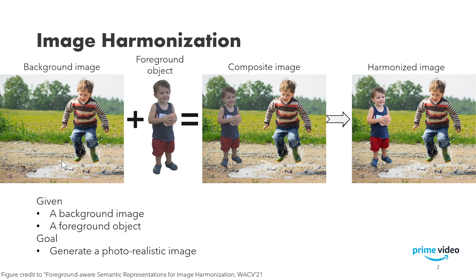What is image harmonization? Given a composite image, which is generated by extracting and copying a foreground object from one image to another background image, the goal of image harmonization is to make the composite image photorealistic.